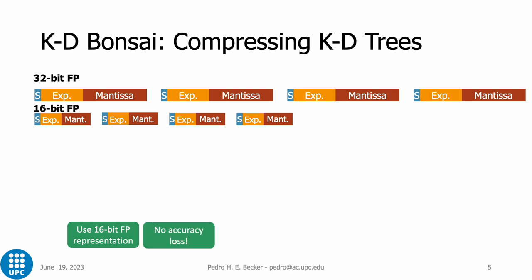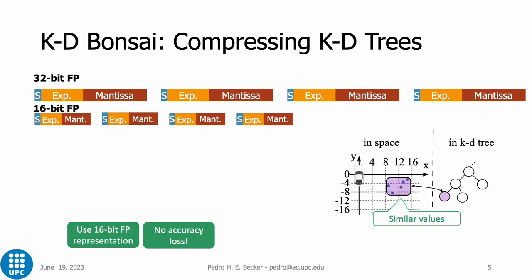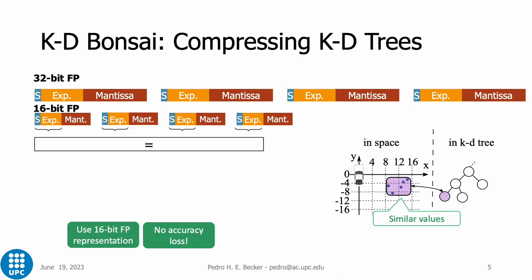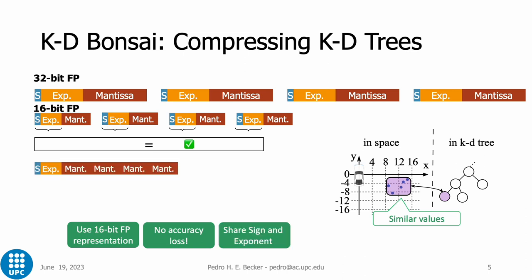Lastly, we identify similarity in the values stored in the tree leaves. This similarity reflects on having the same sign and exponent values on the floating-point representation. We can rearrange the bits to save space by observing this behavior.